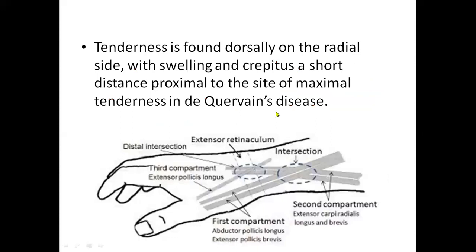Looking at the diagram, the large circle shows the two tendons of the first compartment — the abductor pollicis longus and extensor pollicis brevis, which are the thumb muscles. They cross with the second compartment, which has two components: the extensor carpi radialis longus and extensor carpi radialis brevis. This crossing site is the site of pain — the friction and synovitis cause the pain and symptoms known as the intersection syndrome.